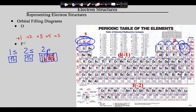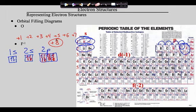Continuing, fluorine plus six removes an electron from the S, and plus seven removes the last S electron. However, we cannot go fluorine plus eight because we can only add or remove electrons from the highest S and P. Because our highest S and P is in the second energy level, the first energy level is off limits and we cannot add or remove electrons from that energy level.